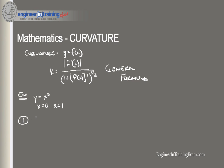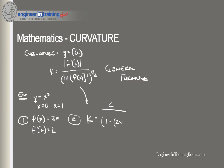The first step is to find f prime and f double prime of the function. So f prime of x is equal to 2x and f double prime of x is equal to 2. Now all we need to do is take our general equation and plug in that information. So we get the curvature K is equal to 2 divided by 1 plus 2x squared raised to the three halves, which can be simplified as 2 divided by 1 plus 4x squared raised to the three halves.